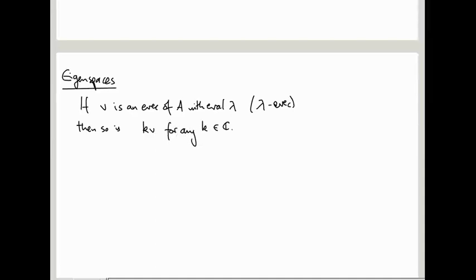And that's for a reason. So if v is an eigenvector of A with eigenvalue lambda, sometimes we just say it's a lambda eigenvector, then so is, let me not call it b. What letter should I use that I haven't really been using very much in this module? k. So is kv for any k in C. Remember we're working with complex eigenvectors. So why is that?